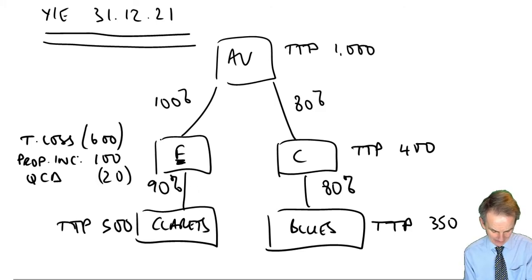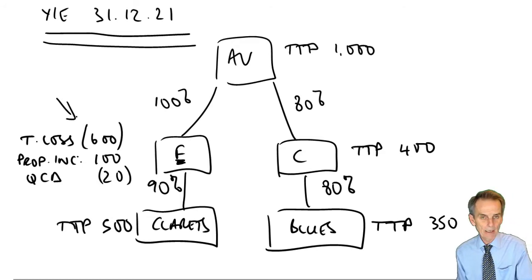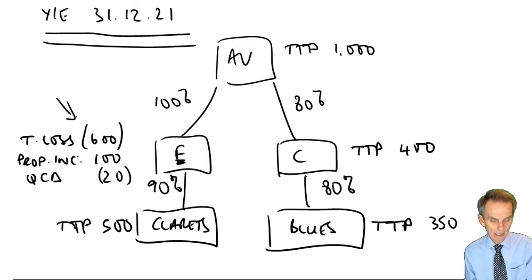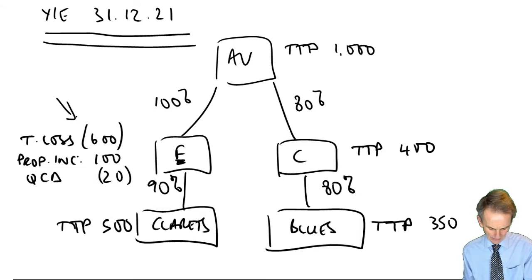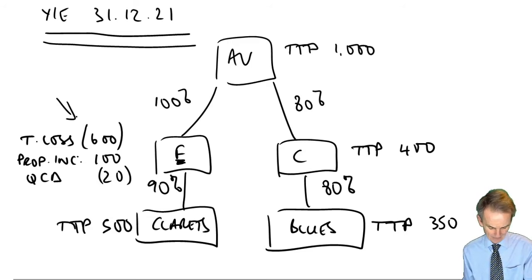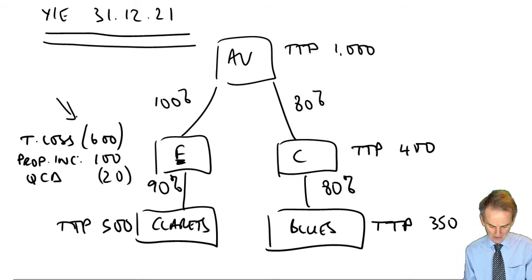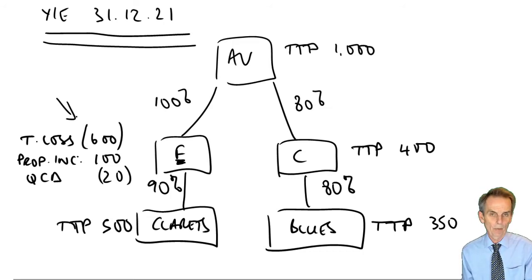Company F has made a trading loss of £600,000. It has other income this period — property income of £100,000 — and also, even though times are hard for it, it's made a qualifying charitable donation of £20,000. Maybe it should be registering as a charity rather than giving to one. But that's the information to go into its own corporate tax computation. The other companies within the AV group are all profit makers.